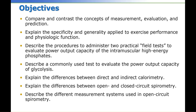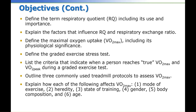Describe a commonly used test to evaluate the power output capacity of glycolysis. Explain the differences between direct and indirect calorimetry. Explain the differences between open and closed circuit spirometry. Describe the different measurement systems used in open circuit spirometry. Define the term respiratory quotient (RQ), including its use and importance, and explain the factors that influence RQ and the respiratory exchange ratio.